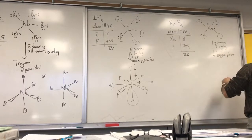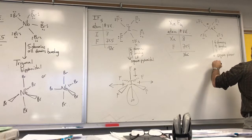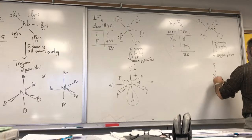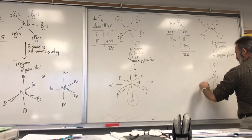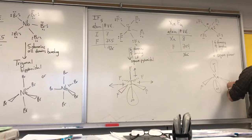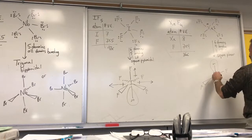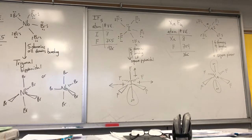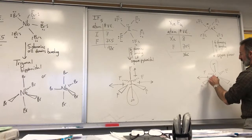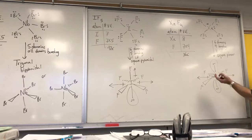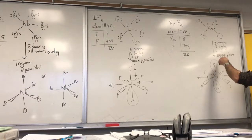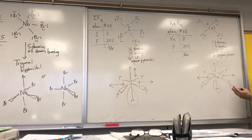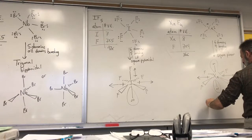To draw a square planar molecule, I like to put the lone pairs one above and one below, and then place the four fluorine atoms with two sticking out toward you and two going behind. Is this molecule polar or nonpolar? It's nonpolar, because the resultant dipole on one side opposes the resultant dipole on the other side and they cancel. Because of symmetry, all dipoles cancel and the molecule is nonpolar.